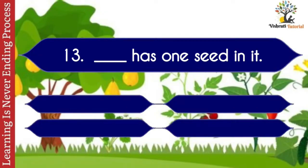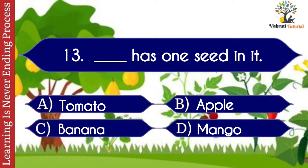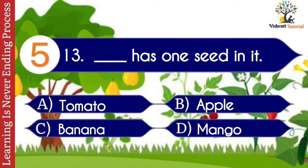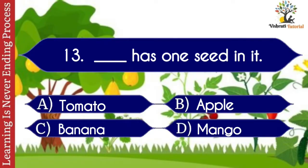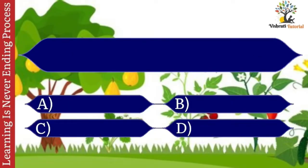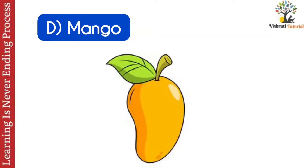Question number thirteen: dash has one seed in it. Options: A. Tomato, B. Apple, C. Banana, D. Mango. The correct answer is D. Mango. Mango has one seed in it.